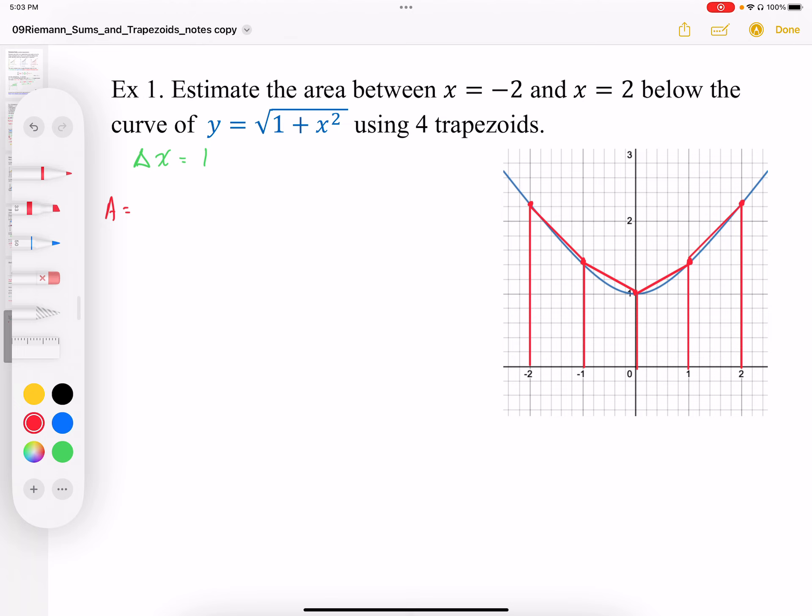So I've drawn the curve and I've also drawn in the trapezoids, 4 trapezoids. We can see that based on the interval width and the number of trapezoids we're using, the interval width is going to be equal to 1 unit.